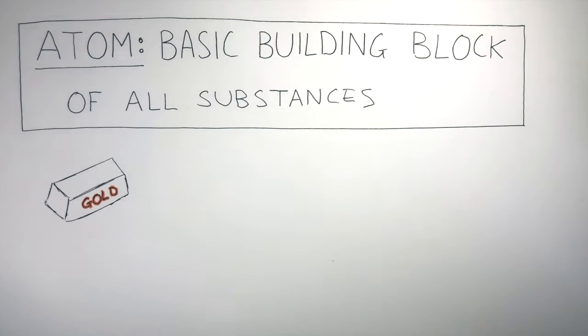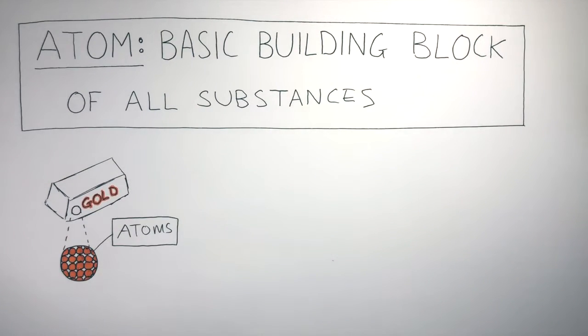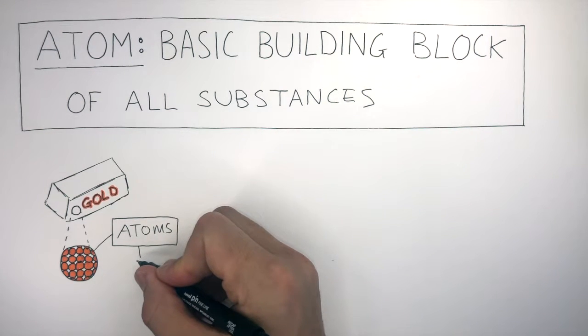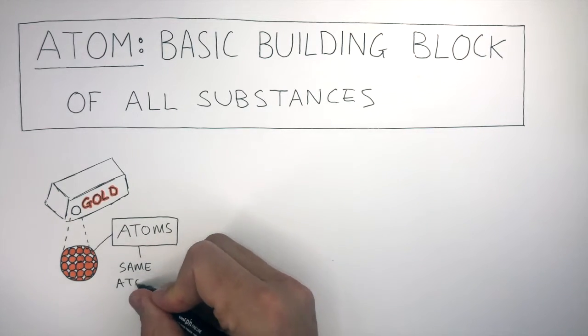Here's a bar of gold. If we zoom in on the gold, we'll see it is made up of atoms, represented by these circles. This bar of gold is made up of 100% gold atoms, so it is the same atoms throughout.